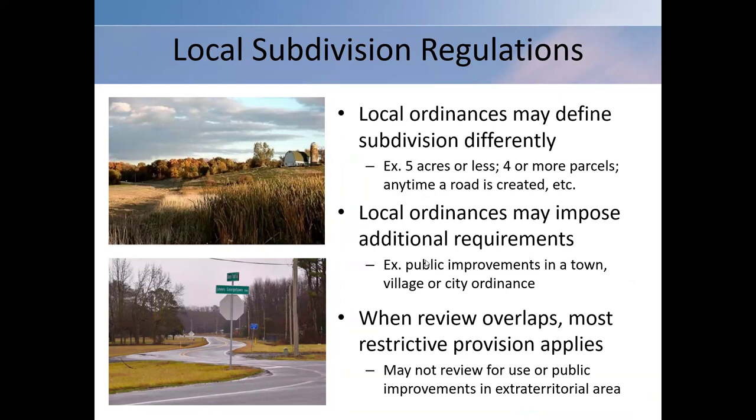You can also have public improvement requirements — that's something that a town, village, or city can have. There are these three different layers of overlapping review. When that occurs, let's say a town and a county are both reviewing, or a town as well as a municipality acting in its extraterritorial jurisdiction — the most restrictive provision from any given ordinance applies.